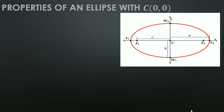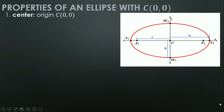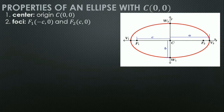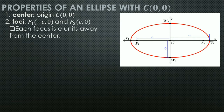Properties of an ellipse with center at the origin. The center is at the origin, so h = 0 and k = 0. The foci are at (−c, 0) and (c, 0) — each focus is c units away from the center. Since we are measuring distance, c is always positive. For any point on the ellipse, the sum of its distances from the foci is 2a.